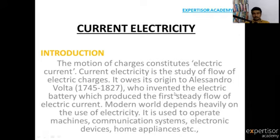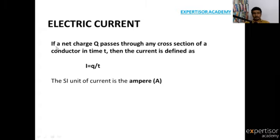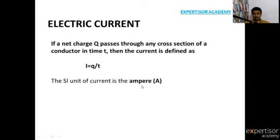The definition of electric current: if a net charge Q passes through any cross section of a conductor in time T, then the current is defined as I, which is equal to charge divided by time. The SI unit of current is ampere, or equivalently coulomb per second — coulomb being the SI unit for charge and second being the SI unit for time.